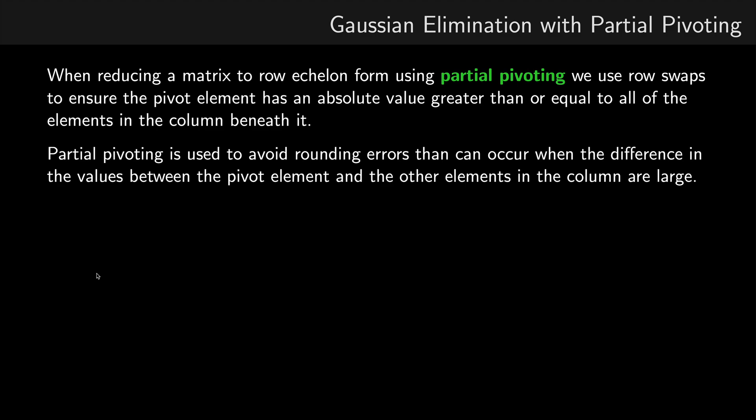Partial pivoting is an extra step in Gaussian elimination where we use row swaps to ensure that the pivot element has a largest absolute value or absolute value greater than or equal to all of the elements in the column beneath it. Now, the reason we use partial pivoting is this avoids some rounding errors that can occur when we have the differences in the values between the pivots and the other elements are large.